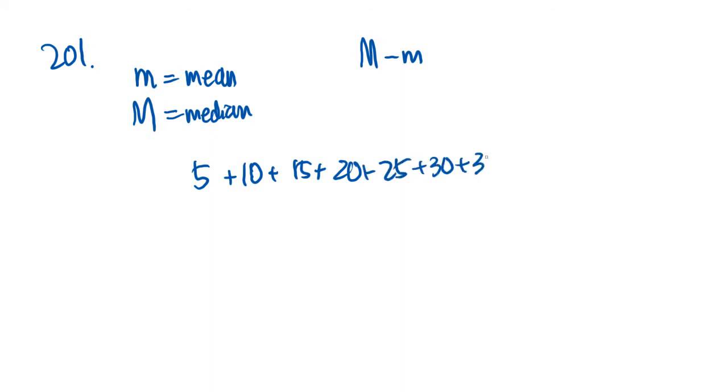201. If M is the average arithmetic mean of the first 10 positive multiples of five. So M is mean. And then uppercase M is median. And they're asking us what is uppercase M minus lowercase M. And the numbers we're given are the 10 positive multiples of five. So 5, 10, 15, 20, 25, 30, 35, 40, 45, and 50.